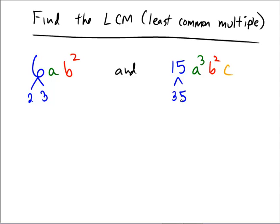In order to cover both of these terms, both of these monomials, we'll need to have a 2 in the end result, we'll need to have a 3, and we'll need to have a 5.